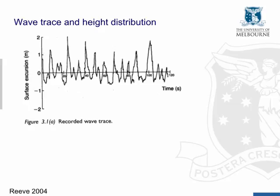We have waves of different height and different periods. So the question then is how we characterize wave conditions when we have such a variable time series of wave heights.